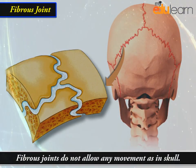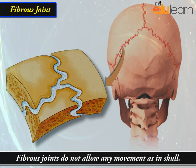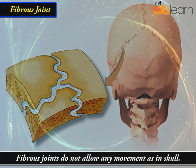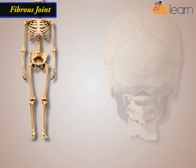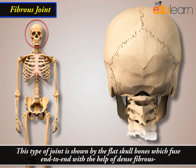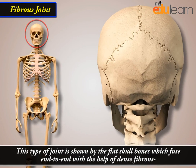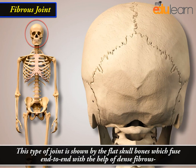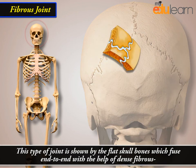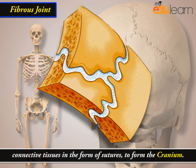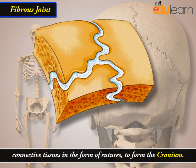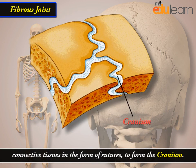Fibrous joints do not allow any movement, as in the skull. This type of joint is shown by the flat skull bones which fuse end to end with the help of dense fibrous connective tissues in the form of sutures to form the cranium.